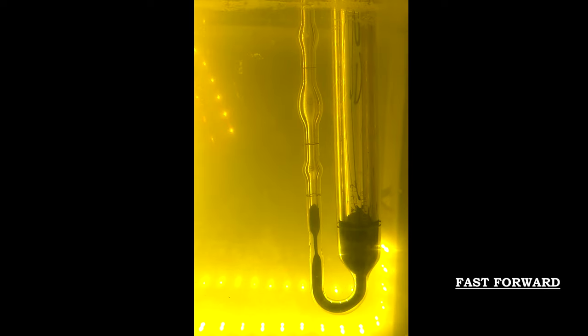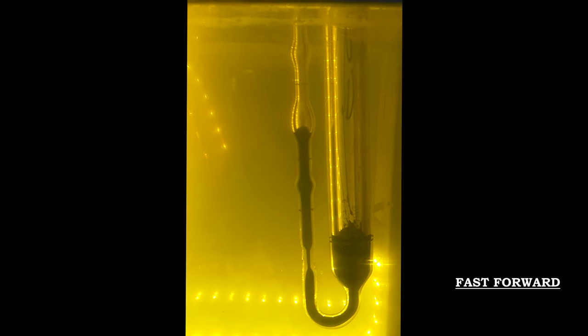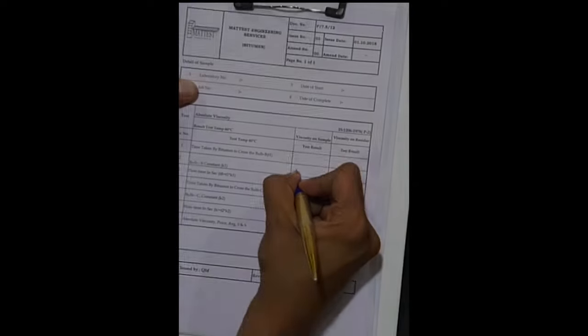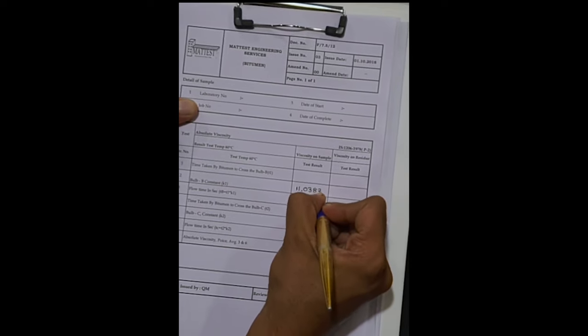Start the test. In this viscometer tube, bulb B constant is 11.0383 and bulb C constant is 4.2032.